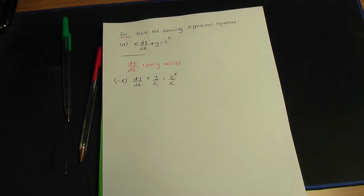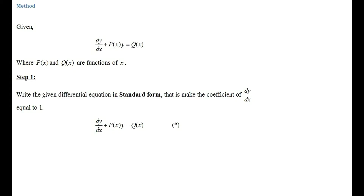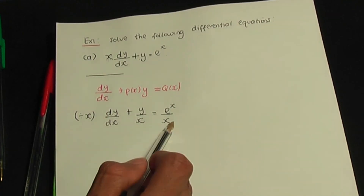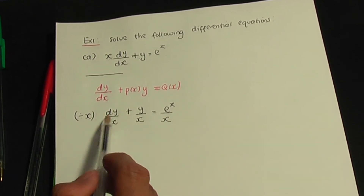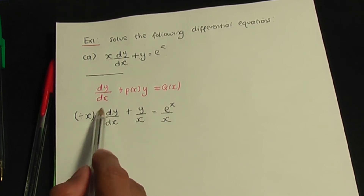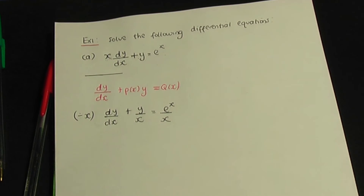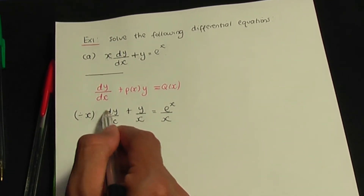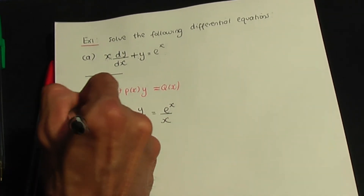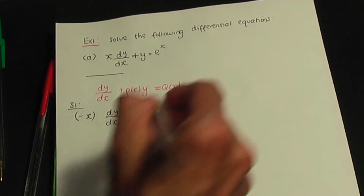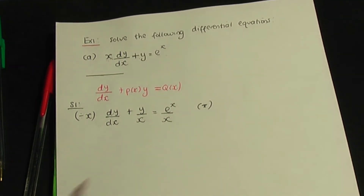Step one: write the equation in standard form. Since the coefficient of dy/dx is already 1, this equation is already in standard form. We'll call this the star equation. Step one is complete.